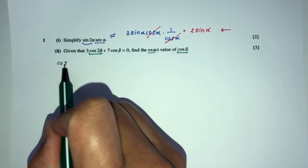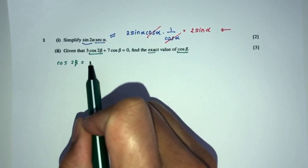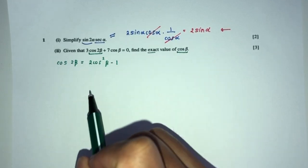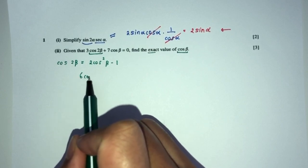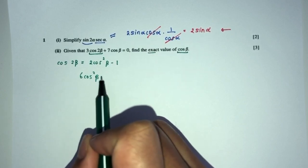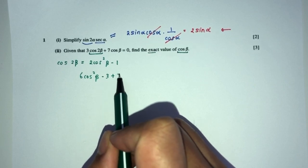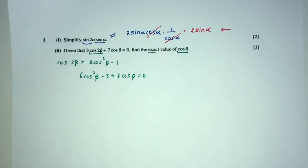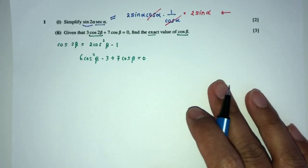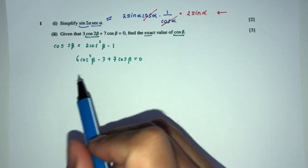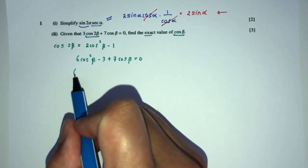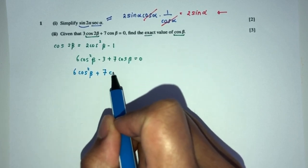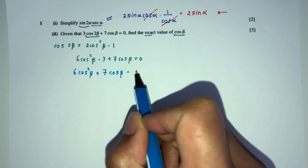We know cos 2β will be the value of 2 cos² β - 1 times 3, that will become 6 cos² β minus 3, plus 7 cos β equals 0. Now we can try to simplify and solve and see what happened.